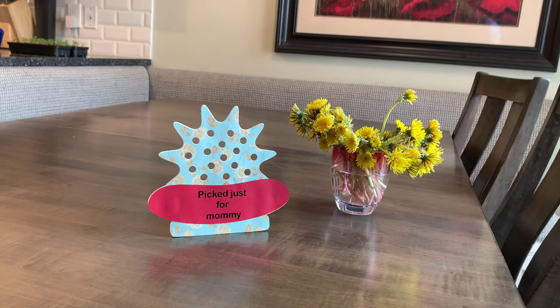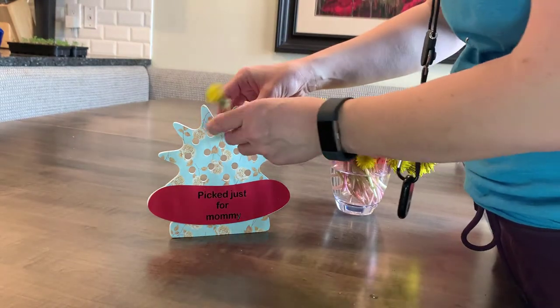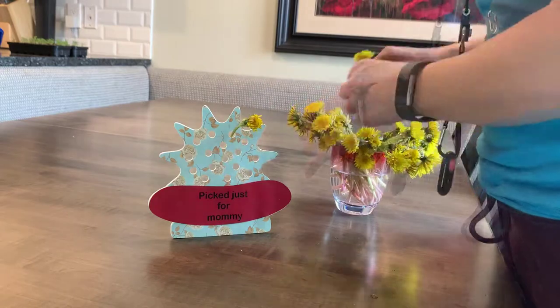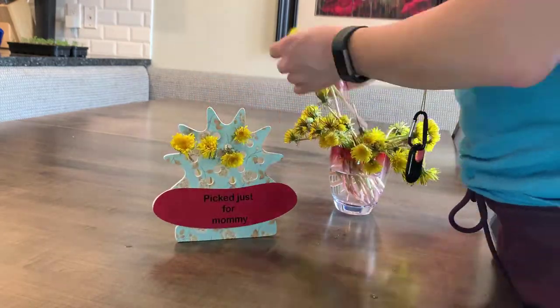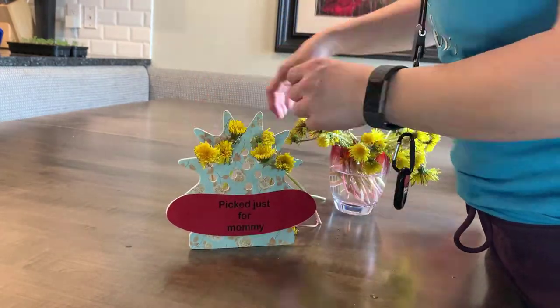Now that the vase is done, it is ready for flowers. Simply pull the flower stem through the holes. You can do one flower per hole or you can do multiple flowers depending on how big the stem is.